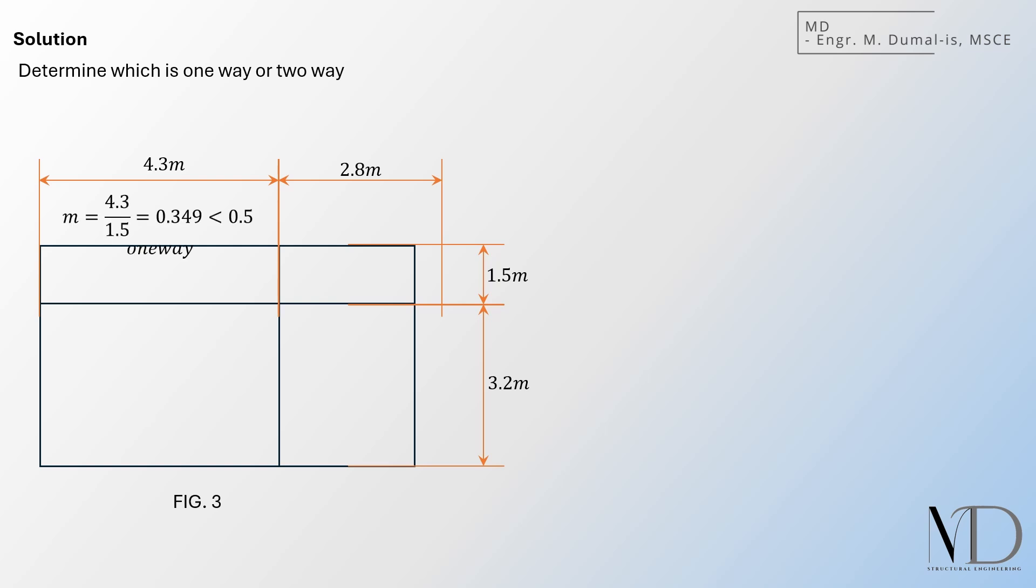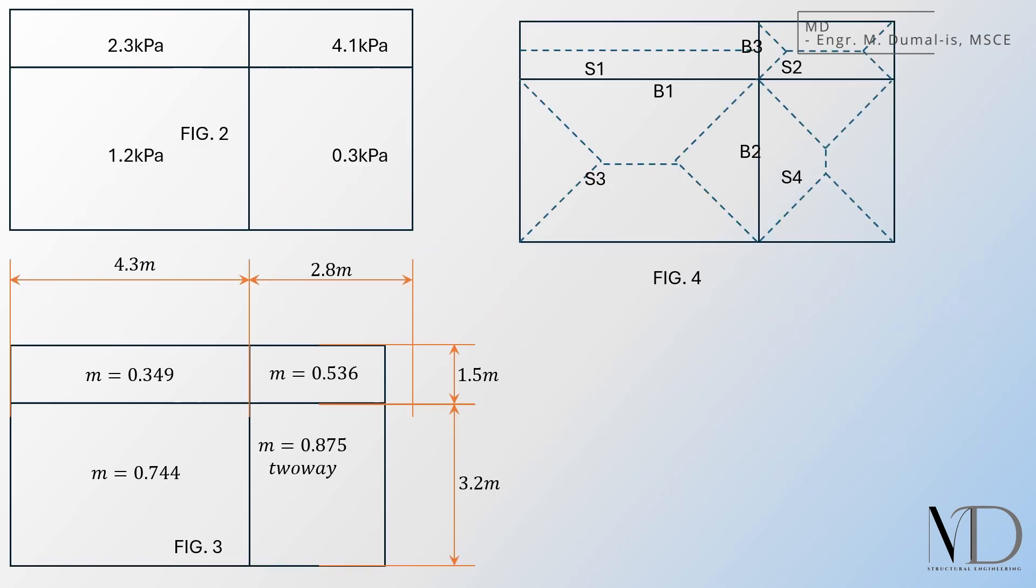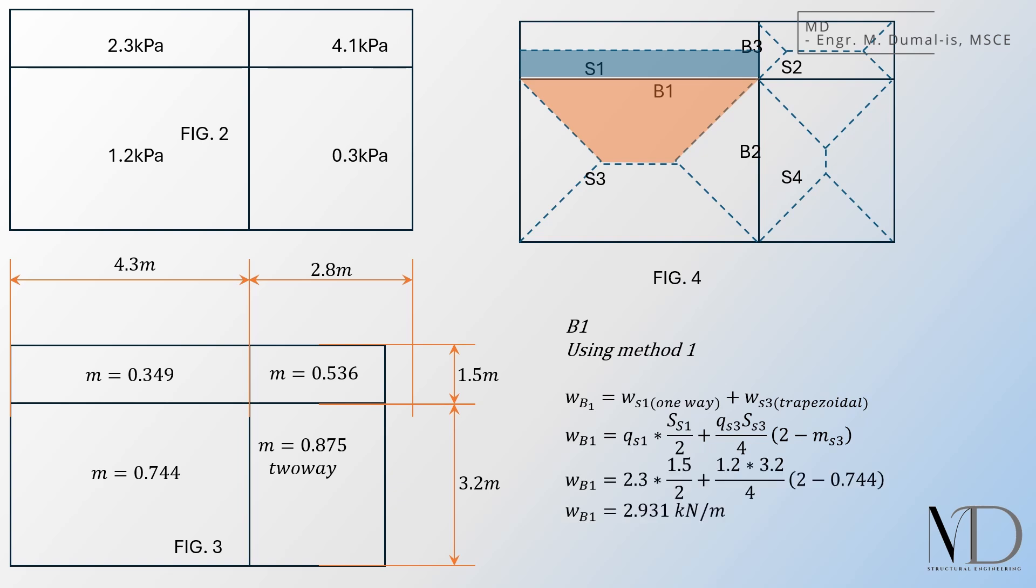Based from the aspect ratios, slab one is one-way, while the rest of the slabs are all two-way. For beam B1, where it carries a portion of S1 and S3, the UDL load of B1 will be the sum of the one-way load distribution from S1, and equivalent UDL along the longer span using equivalent maximum shear from S3. And so, the final uniformly distributed load for beam B1 will be as follows.